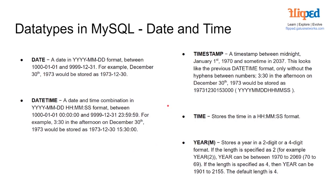Then we have our timestamp, which ranges between midnight January 1st, 1970 and sometime in 2037. This looks like the previous datetime format, only without the hyphens between the numbers. For example, 3:30 in the afternoon on December 30th, 1973 would be stored as 19731230 153000, which is our year, month, day, hour, minutes, and seconds. Then we have our time, which stores the time in hour, minute, second format — the same as datetime but without the date. And our year type stores a year in two-digit or four-digit format. If the length is specified as 2, the year can be between 1970 and 2069 (70 to 69). If specified as 4, then a year can be 1901 to 2155. The default length is four.